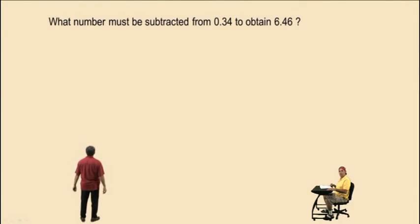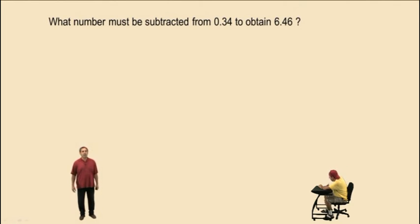What number must be subtracted from 0.34 to obtain 6.46? We need to set up an equation, and we have an unknown number. We are going to let x represent that unknown quantity. So what number x must be subtracted from? So x is being taken away from something, so that subtraction has to go in front of the x. Well, what is it being subtracted from? 0.34, so that goes out in the front. To obtain gets replaced with equals 6.46. There we go. There's our equation.